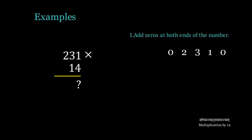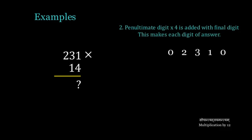231 multiplied by 14. Adding zeros at both ends, we get 0, 2, 3, 1, 0. Now, 4 times 1 is 4, plus 0 is 4. 4 times 3 is 12, plus 1 is 13 — we write 3 and carry 1. 4 times 2 is 8, plus 3 is 11, plus the carried 1 is 12 — we write 2 and carry 1. Then 0 plus 2 plus 1, we get 3. So 231 multiplied by 14 is 3234.